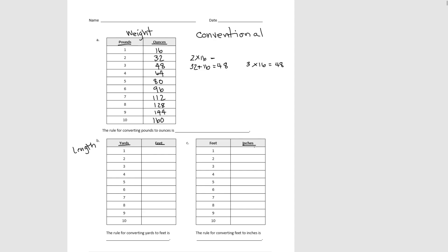That strategy works as long as the number of pounds is increasing by just 1 every time. So our rule for converting pounds to ounces is to multiply by 16.